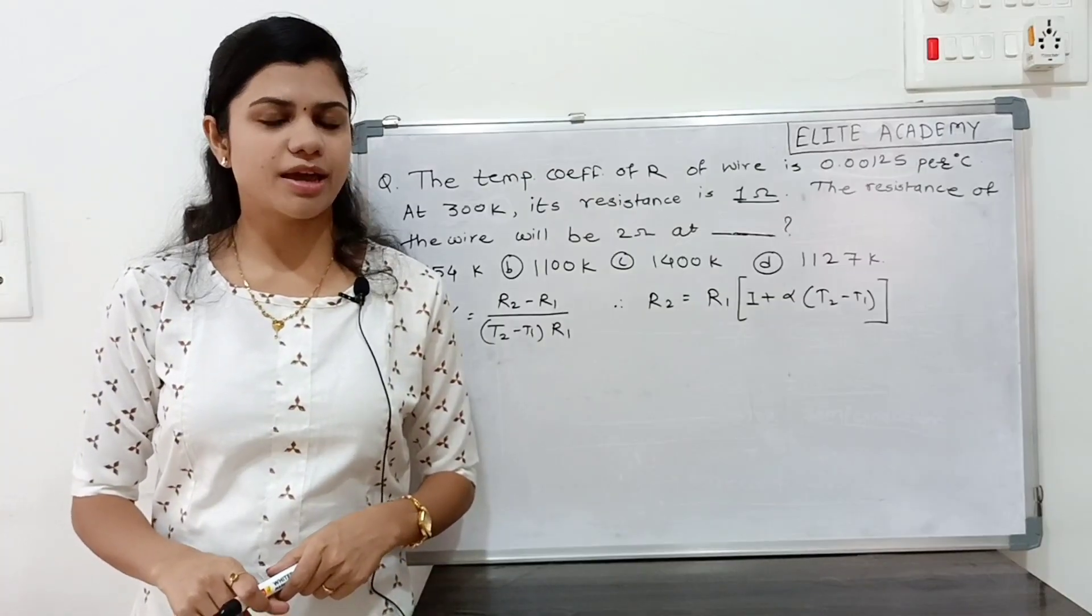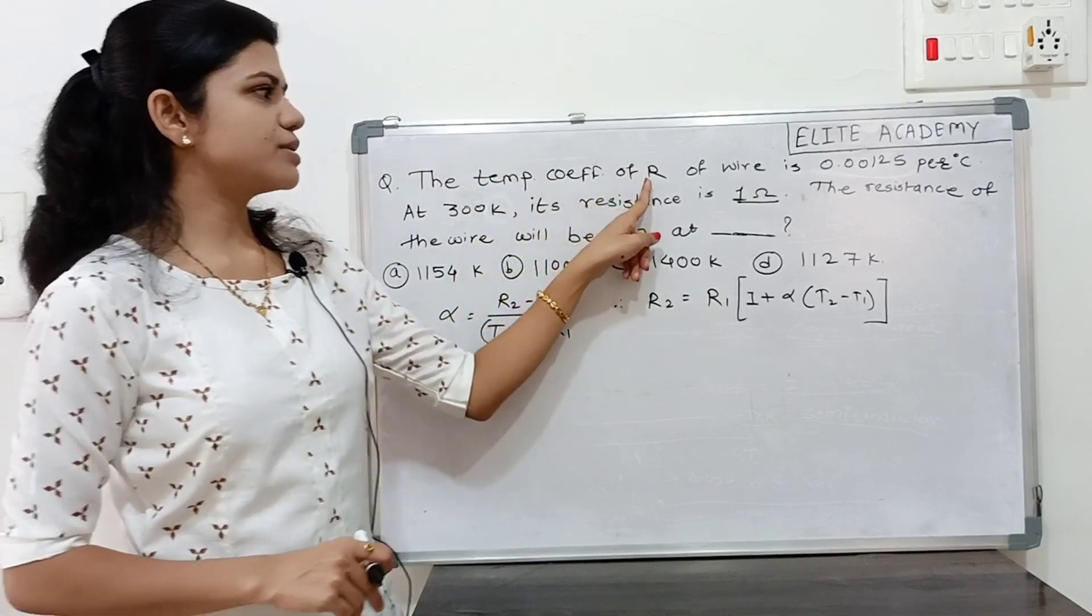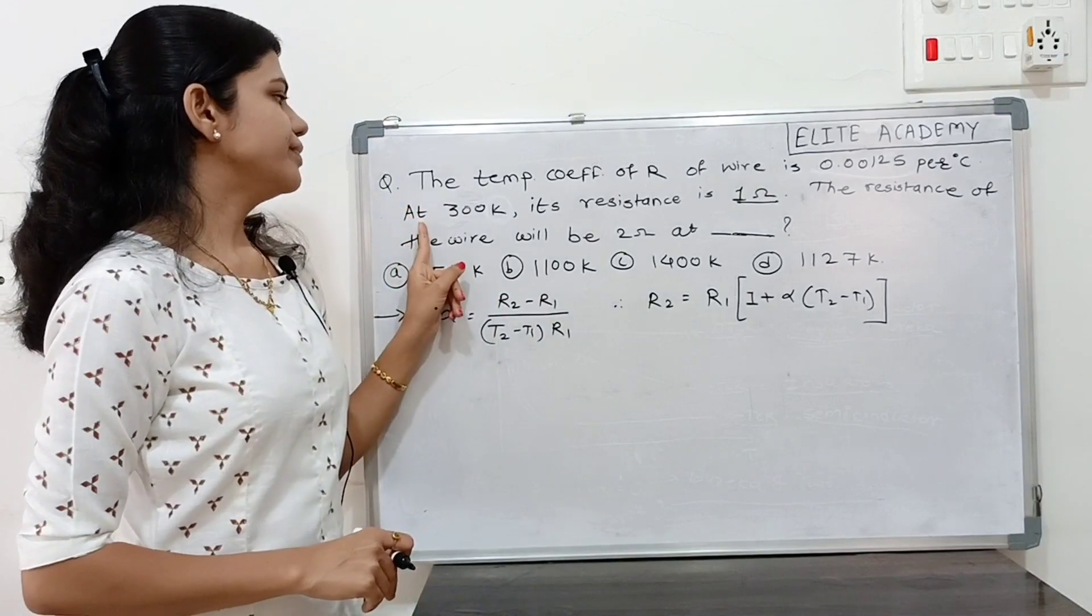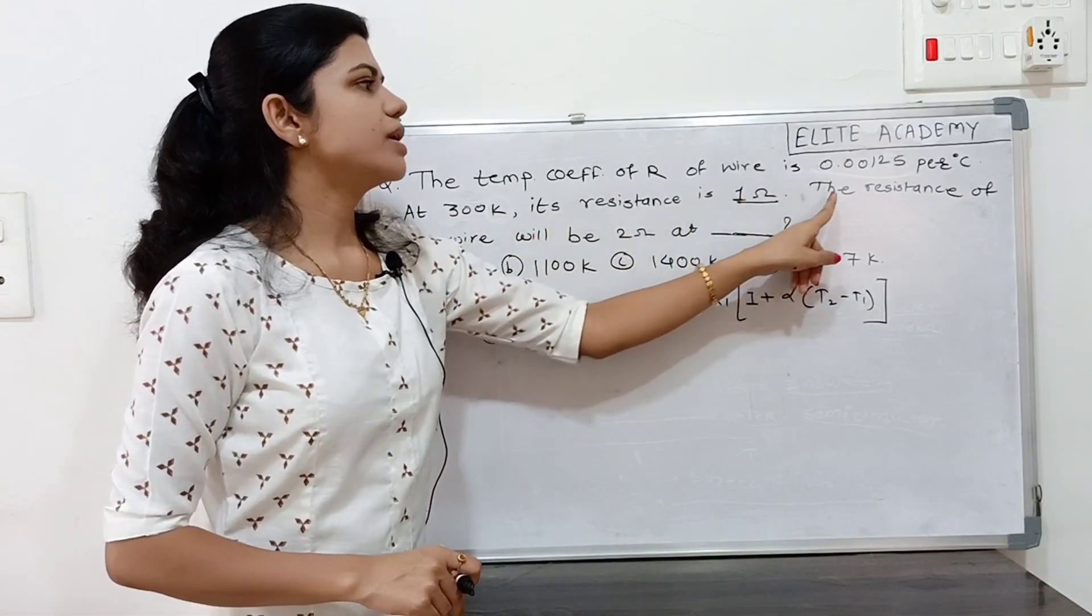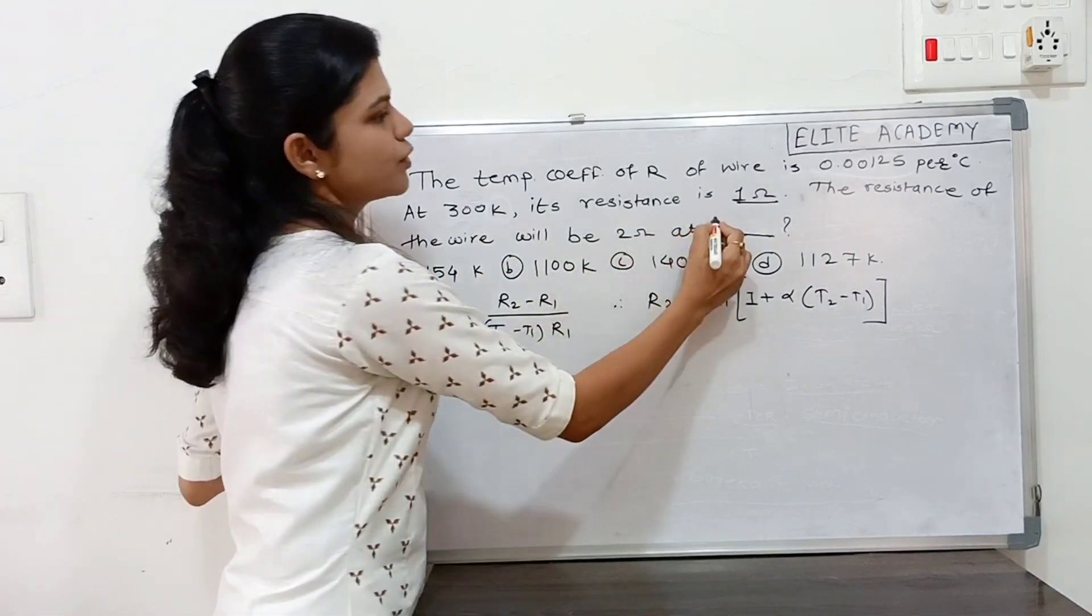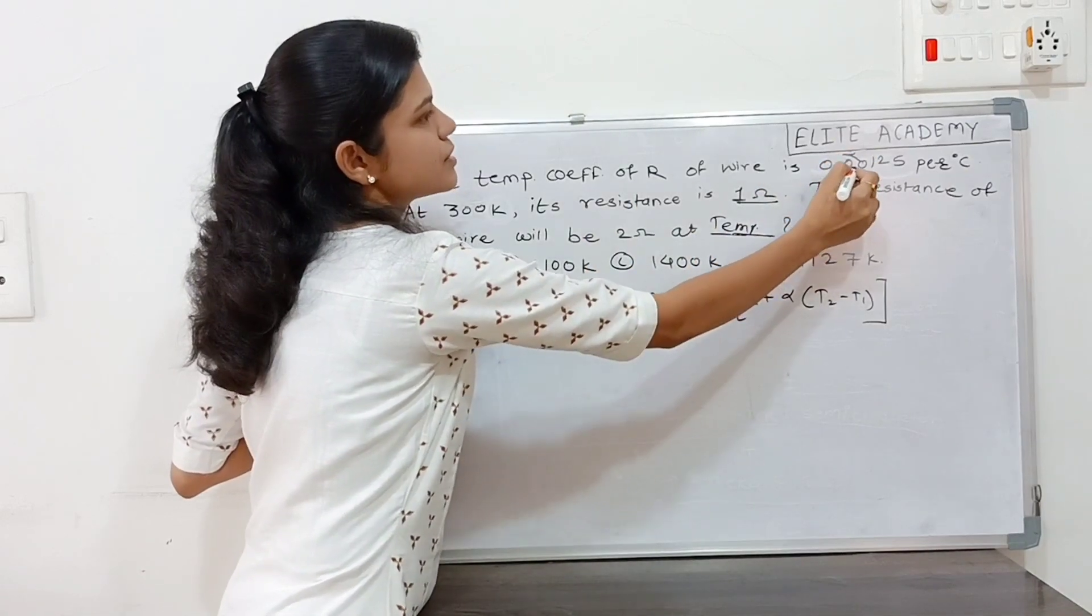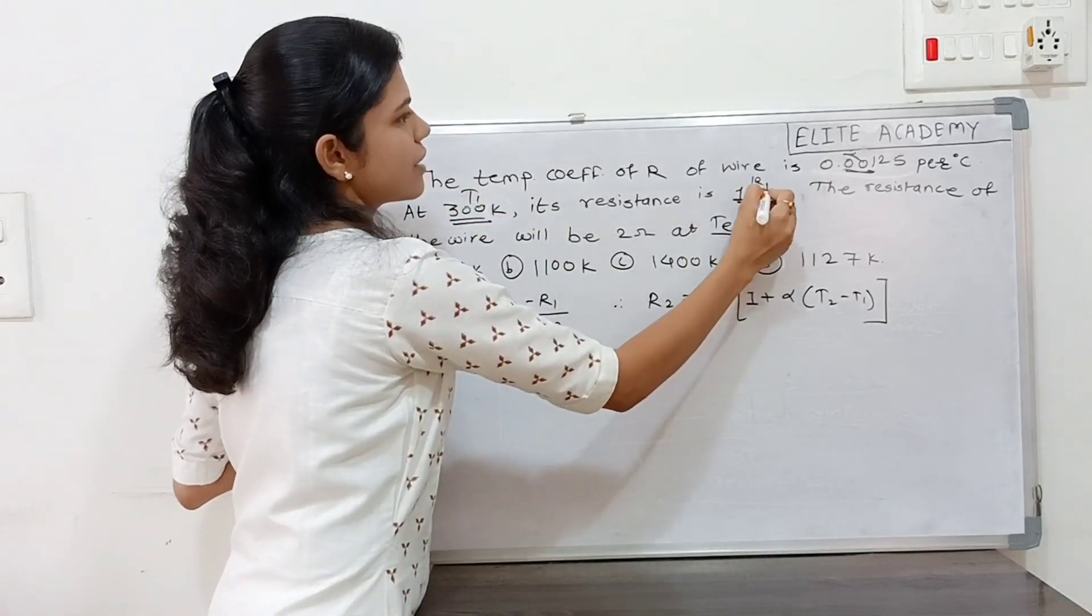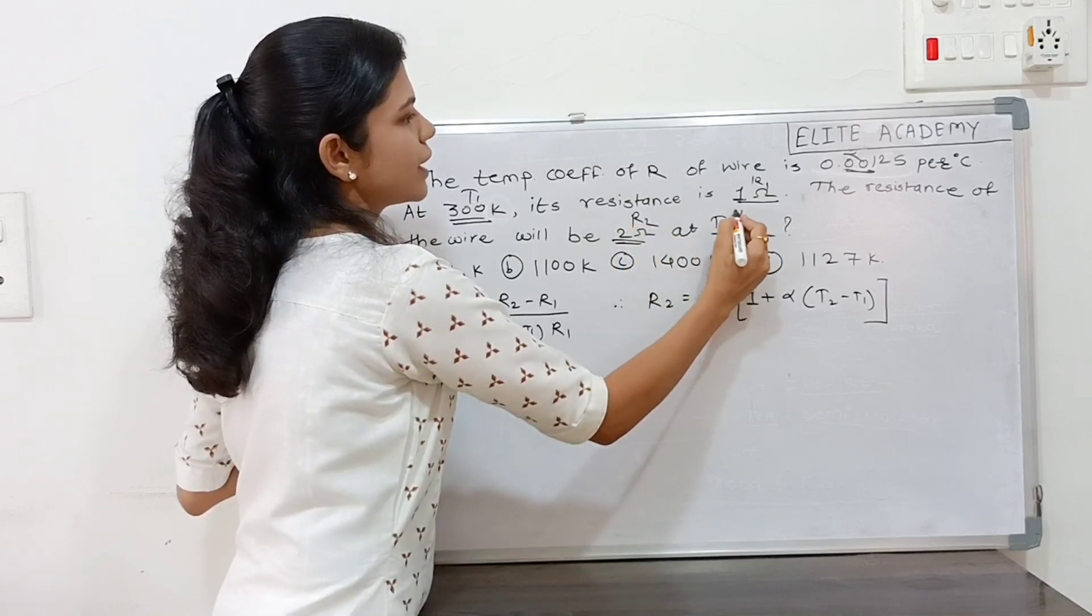Let's check out how we can solve the MCQ based on TCR. The temperature coefficient of resistance of wire is 0.00125 per degree Celsius at 300 Kelvin. Its resistance is 1 Ohm. The resistance of the wire will be 2 Ohm at, means here we have to find out the temperature. The alpha is given, TCR is given. Here T1 is given. Resistance R1 is given. R2 is given but we have to find out the T2.